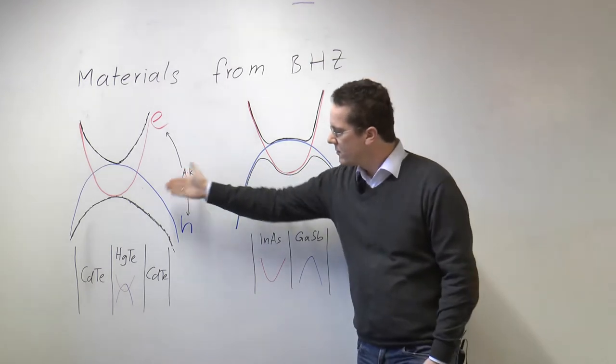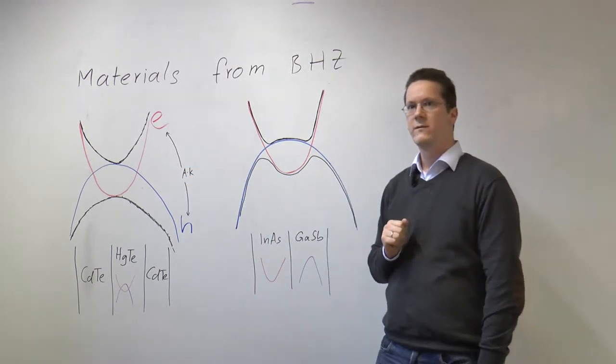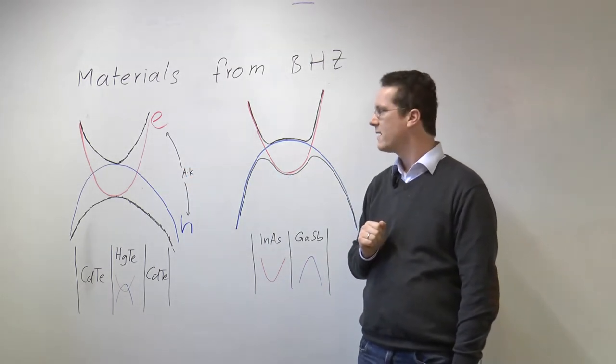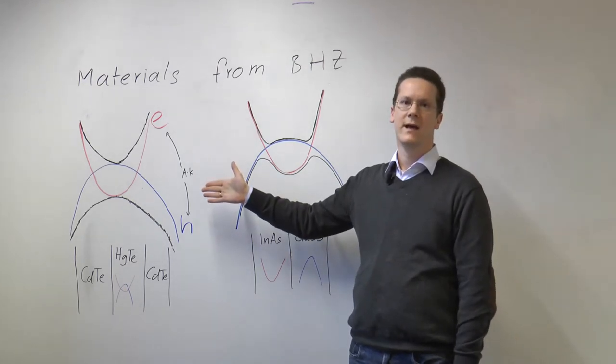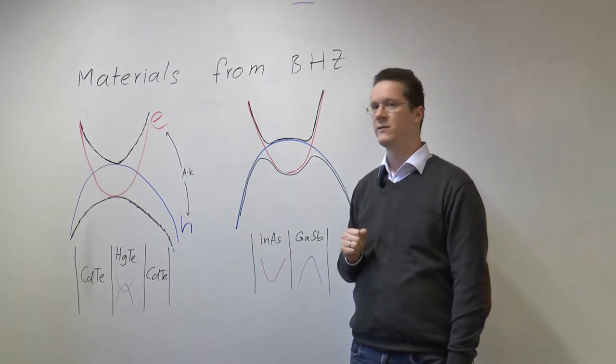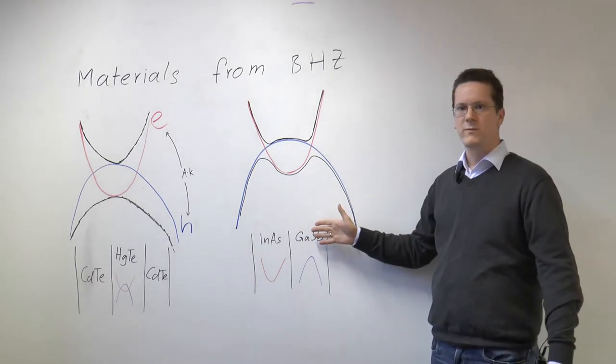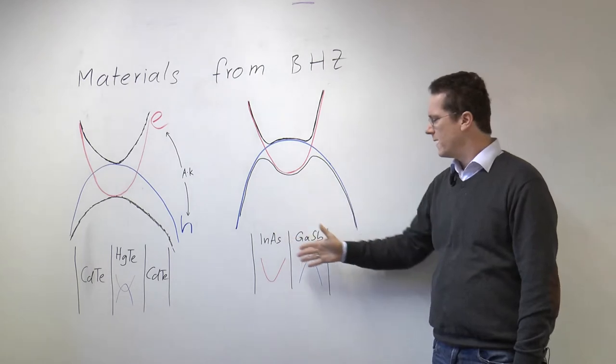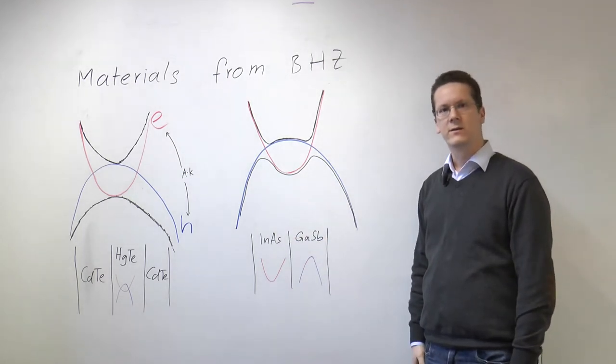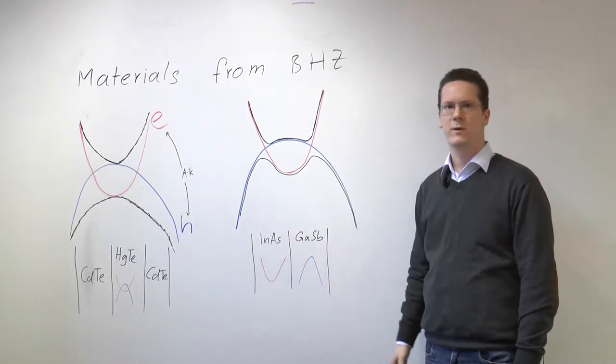Now this is the original material that Bernevig, Yu and Zhang were predicting to be topological insulators that subsequently was observed experimentally in Würzburg. This material is newer, was also predicted by the group of Professor Zhang, and there's not many labs in the world that are trying to make this material as a topological insulator.